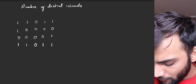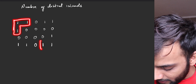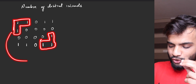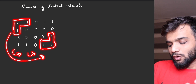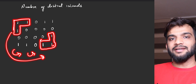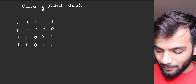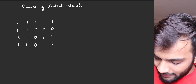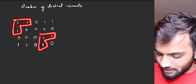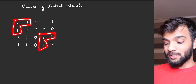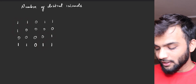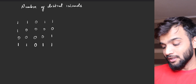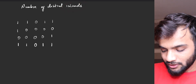Imagine this is the N×M matrix. If I take this island and this island, they might look identical but one is rotated twice anti-clockwise to get the other, so you cannot say they are identical. But if the configuration were like this — one and zero — then I could say these two are identical.